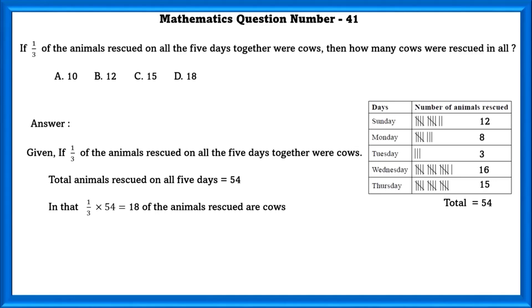If 1 by 3 of the animals rescued on all 5 days were cows, then how many cows were rescued in all? Given 1 by 3 of the animals rescued on all 5 days are cows, total animals rescued on 5 days is equal to 54. In that case, 1 by 3 into 54 which is equal to 18 of the animals rescued were cows.